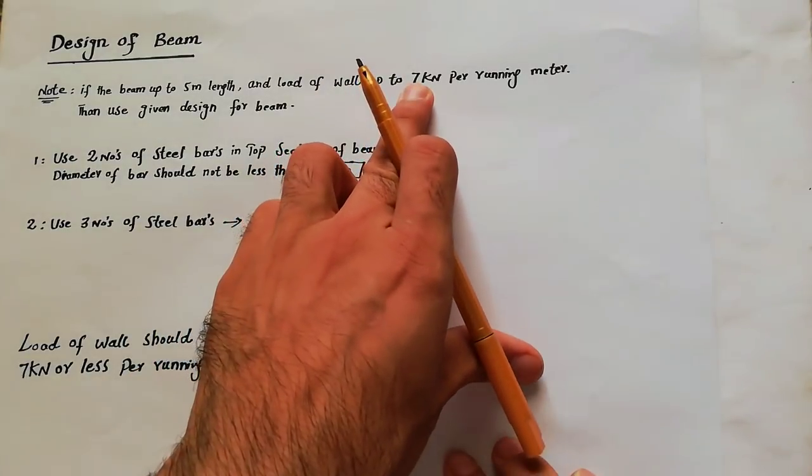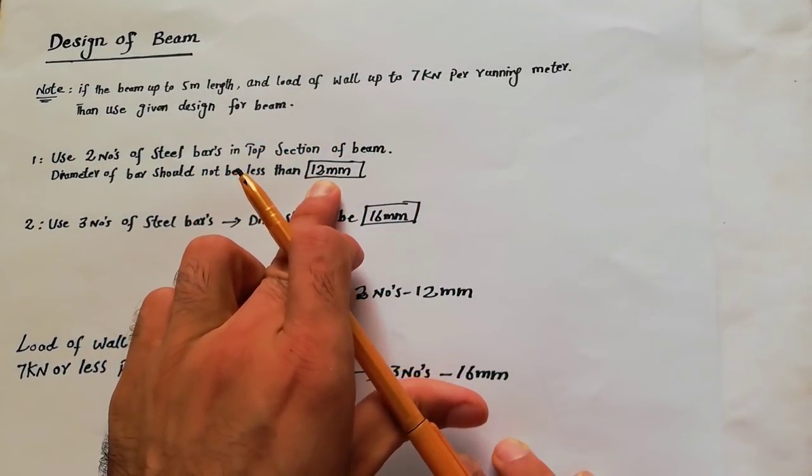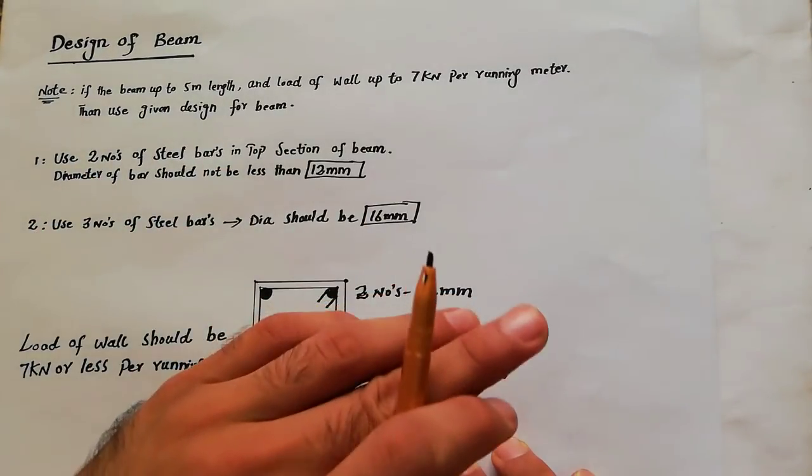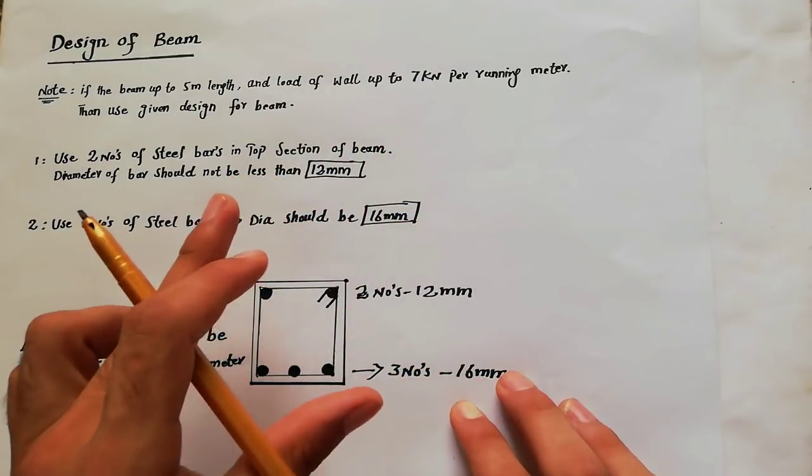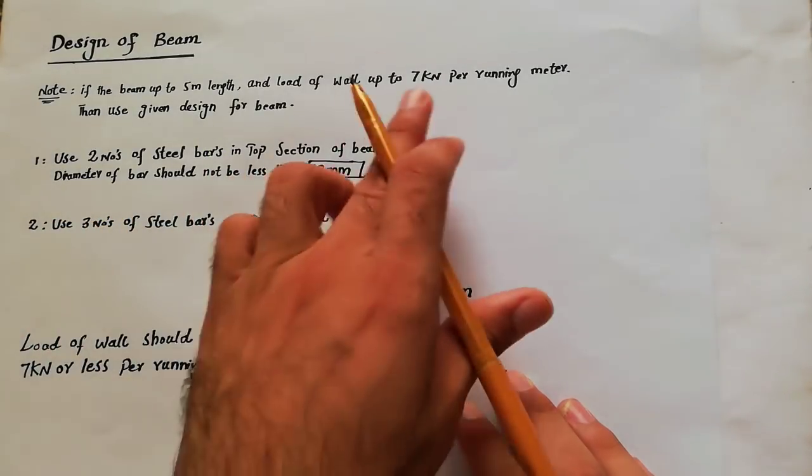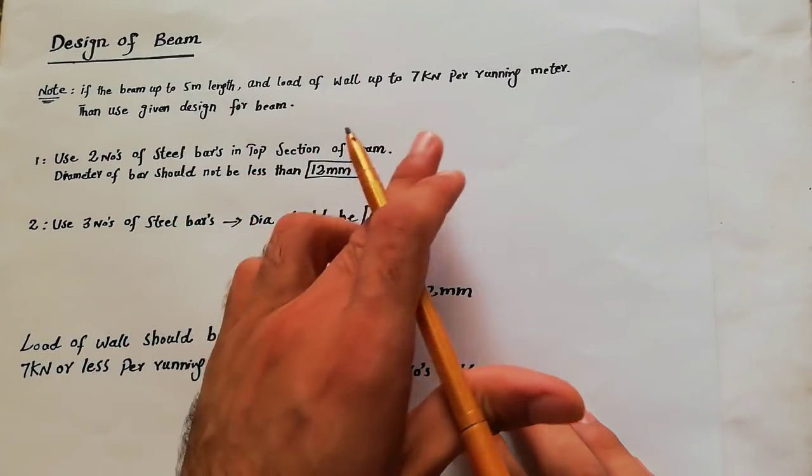If it's more than 7 kilonewton, don't use 12 mm dia and two numbers, so the design will be changed. Actually I have done the design - you can also do the design for your beam if the load is same like this. Otherwise you are not able to do the design if the load is more or something other.